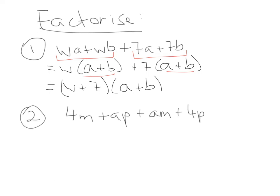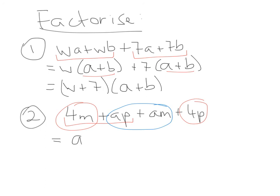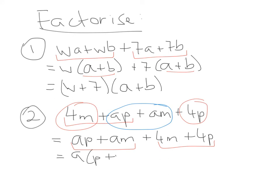For the second one, we need to be a little more careful because the first two terms don't actually have anything in common. The middle two terms have the letter a in common, and the first and last terms have the number 4 in common. So we rewrite this: ap plus am plus 4m plus 4p. That gives us a bracket p plus m, plus 4 bracket m plus p. The brackets are identical, so that's going to be a plus 4, multiplied by m plus p.